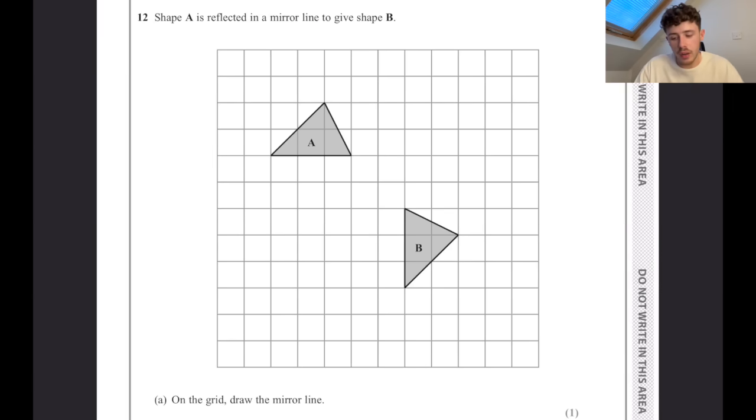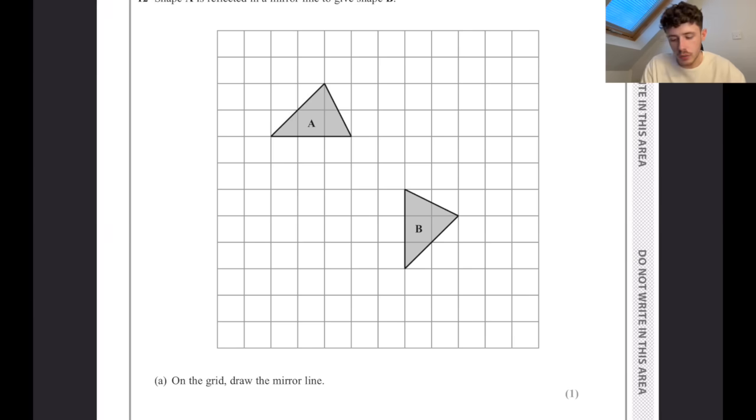Shape A is reflected in a mirror line to give shape B. On the grid, draw that mirror line. There's multiple ways you could do this, but just by trial and error, I can see that the line is going to be here where I've put this red one. You can verify this by just checking that the distance away from each corner is the same on both sides. Here you've got two and a half, two and a half, and that is correct.